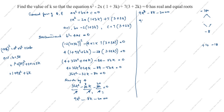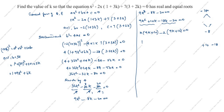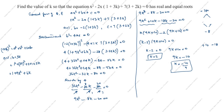Splitting the middle term: 9k squared plus 10k minus 18k minus 20 equals 0. Taking pairs: k(9k plus 10) minus 2(9k plus 10) equals 0. So (9k plus 10)(k minus 2) equals 0. From 9k plus 10 equals 0: k equals minus 10 over 9. From k minus 2 equals 0: k equals 2. Thanks for watching this video.